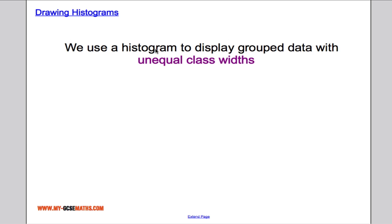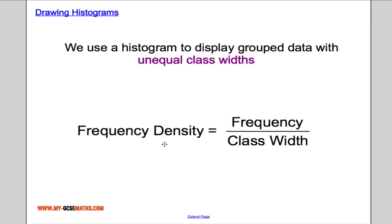The important thing about histograms is that we use them to display grouped data with unequal class widths. So we've done frequency diagrams before. A histogram is a type of frequency diagram, but instead of having frequency on the y-axis we use something called frequency density. And the frequency density is calculated by dividing the frequency by each class width. And this is something that you definitely need to know for your exam.